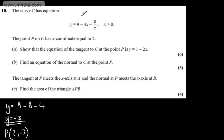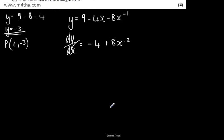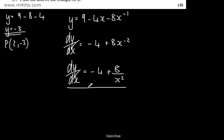To find the gradient, we differentiate y with respect to x. We rewrite y as 9 minus 4x minus 8x to the power of negative 1, then differentiate: the constant gives 0, differentiating 4x gives negative 4, and differentiating negative 8x to the negative 1 gives plus 8x to the negative 2. So dy/dx equals negative 4 plus 8 over x squared — that's the gradient function.